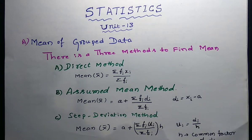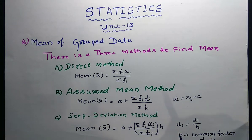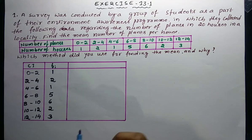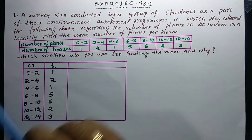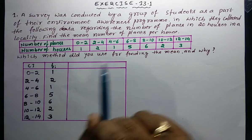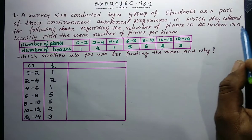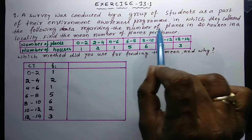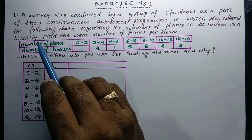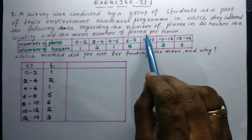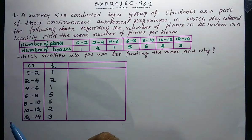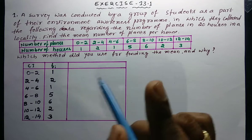We will now solve a problem from exercise 13.1 to understand how to find fᵢ, xᵢ, uᵢ, dᵢ, and h. The first problem: a survey was conducted by a group of students as part of their environment awareness program, in which they collected data regarding the number of plants in 20 houses in a locality. Find the mean number of plants per house.